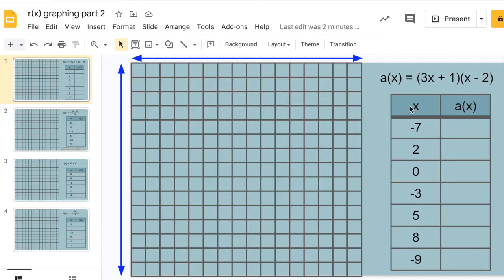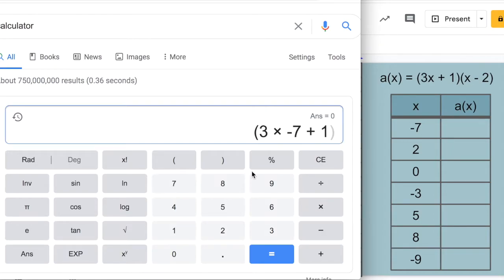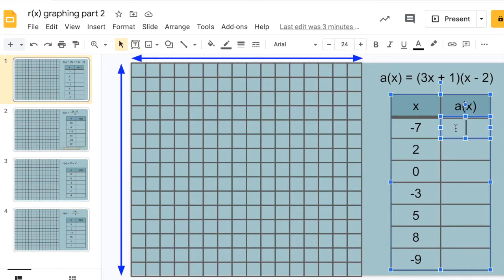Just a reminder, so we have our input values that are being given to you today. Start with negative 7, here's our formula, parenthesis, 3 times negative 7 plus 1, parenthesis, times negative 7, minus 2. Get an answer, 180. And I'll fill out the rest of the table the same way.